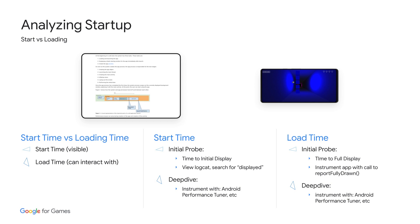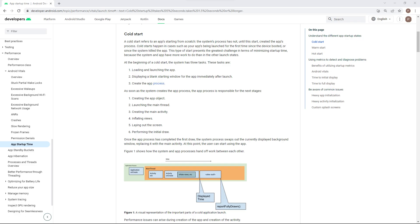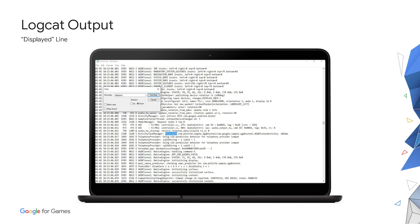We begin with startup and start time versus load time. Here we're looking at time to initial display (TTID) versus time to fully drawn (TTFD) — basically visible versus interactable. For startup time (TTID), use Logcat and search for 'displayed.' Load time (TTFD) can be more complex. You can instrument 'reportFullyDrawn' to measure, or Android Performance Tuner can help you measure real-world performance with results visible in the Play Console. Using ADB, get the log and find the displayed line. It's good enough as an initial probe. In this case, the start time is below one second.